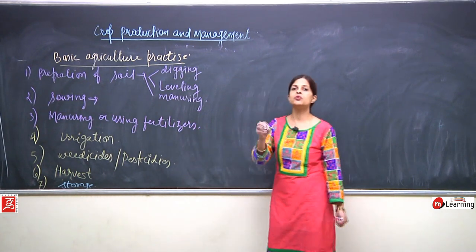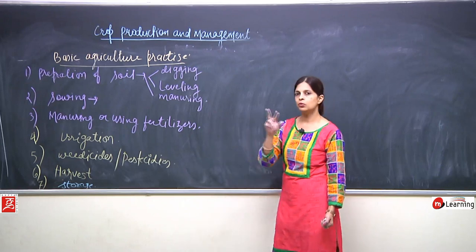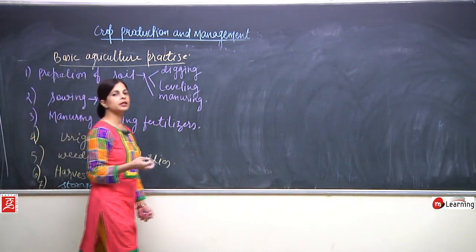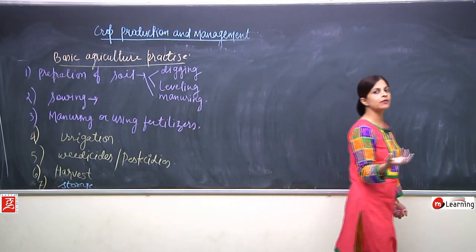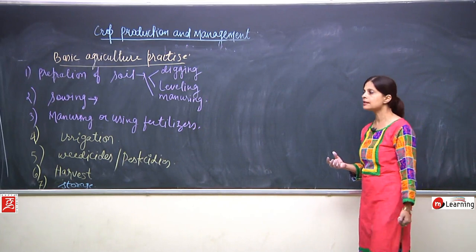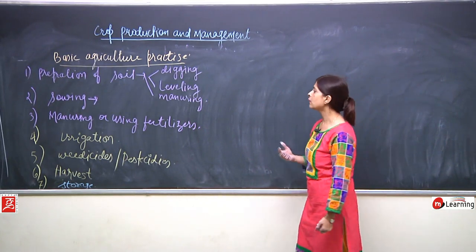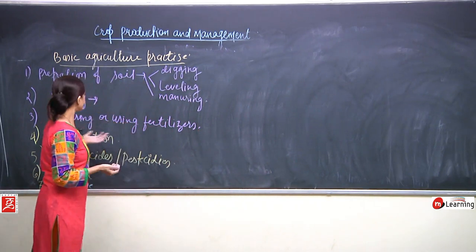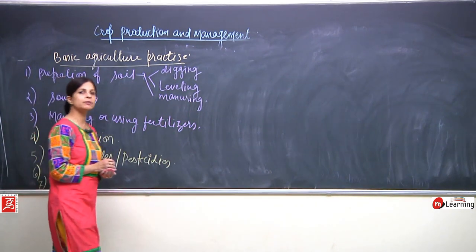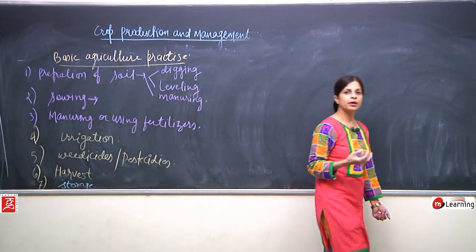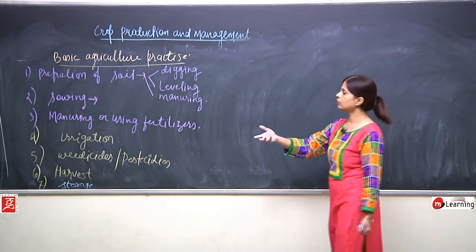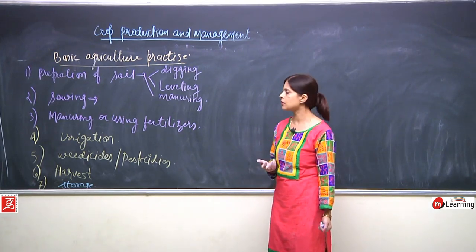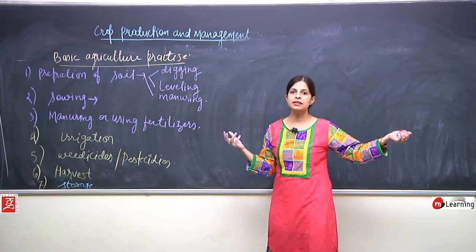In sowing, we will read all the important steps, what instruments are used. In manuring or using fertilizers — I have written two things: manure and fertilizer. We will study why manures are necessary, why we have to add fertilizer, can we have a good crop without manures and fertilizers, what are the advantages of manures, what are the disadvantages, what are the advantages and disadvantages of fertilizers.